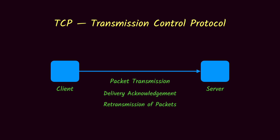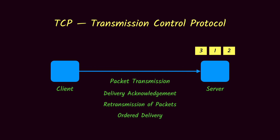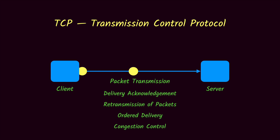TCP also provides ordered delivery. The client can send packets in any order, but the server will rearrange them into the correct sequence before passing them to the application layer. Finally, TCP has congestion control — the client can slow down or speed up packet transmission depending on network congestion. If a router is slow and packets are dropping, the client will slow down sending until the congestion is resolved.